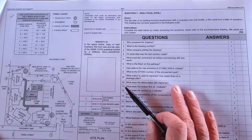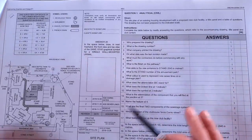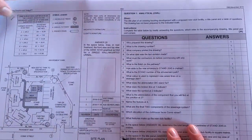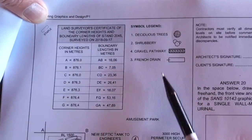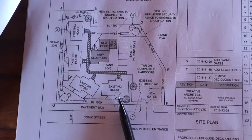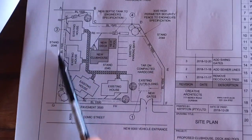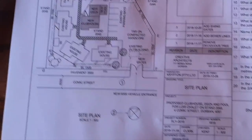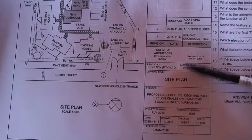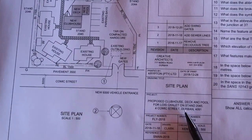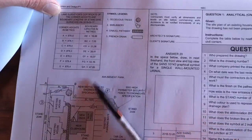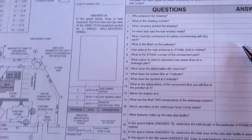First, use your 10 minutes of reading time to look through all the details in the paper. On the left-hand side you'll find your land surveyor certificate and some symbols or legends — that's important. You'll also find your actual site plan, the north arrow, and the title block at the bottom. Read through the revisions, the project name 'Proposed Clubhouse,' the signatures, and the note to the contractor before you start answering questions.